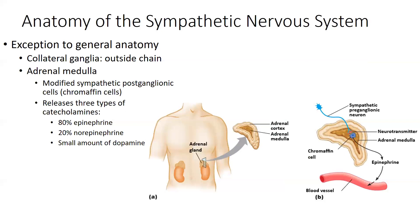Think about it — if a dog is chasing you, if you have some sort of threat, you want things to go pretty fast. You want this response to be diffuse and fast, not a one-on-one communication. So this organization helps the sympathetic nervous system give a wide diffuse response. These are the two exceptions: synapse at a collateral ganglion, which is not part of the sympathetic chain, or synapse at the adrenal medulla where chromaffin cells release epinephrine and norepinephrine into the bloodstream.